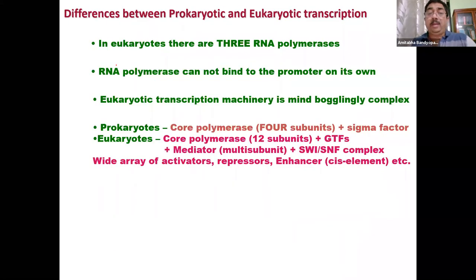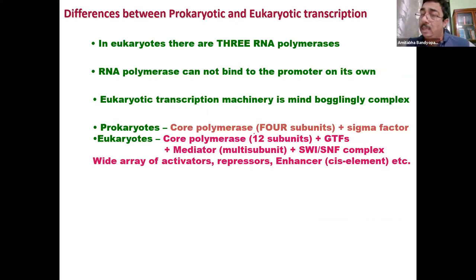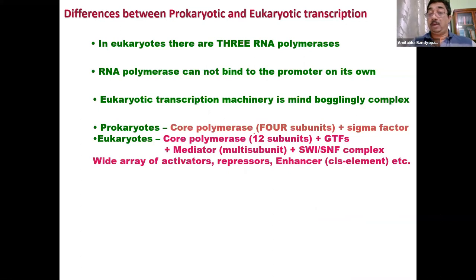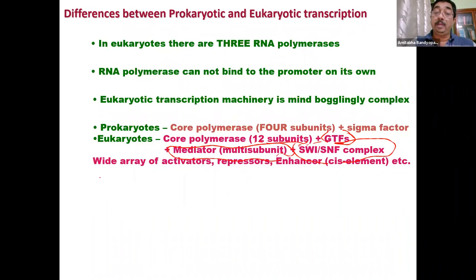In prokaryotes you have a core polymerase and sigma factor, and in some cases proteins that bind to the operator. But in eukaryotes, the core polymerase has 12 subunits. Then there are GTFs — which don't even exist in prokaryotes as far as we know. There is a multi-subunit mediator complex. Then there is the SWI/SNF complex. Then there are a wide array of activators and repressors.